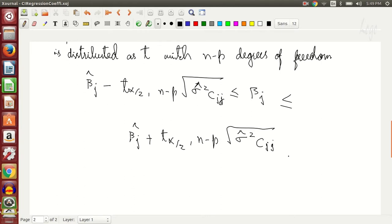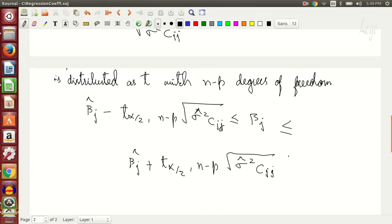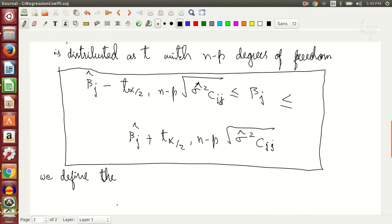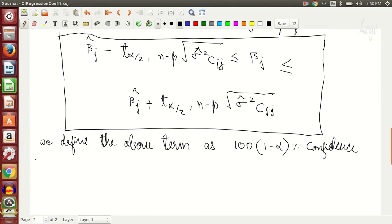So we usually define this as 100, 1 minus alpha, where 1 minus alpha is the level of significance. So if alpha is 5%, then it is a 95% confidence interval.